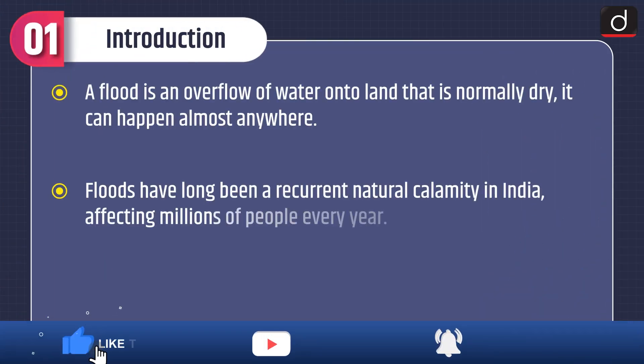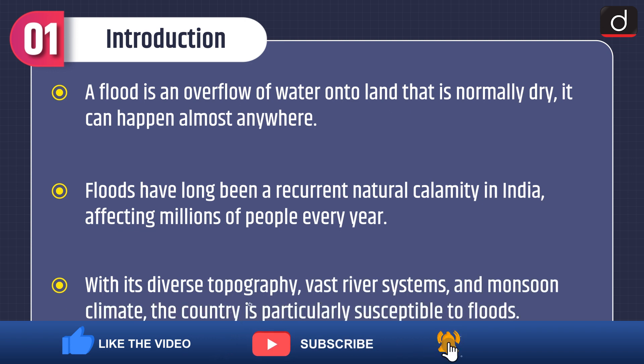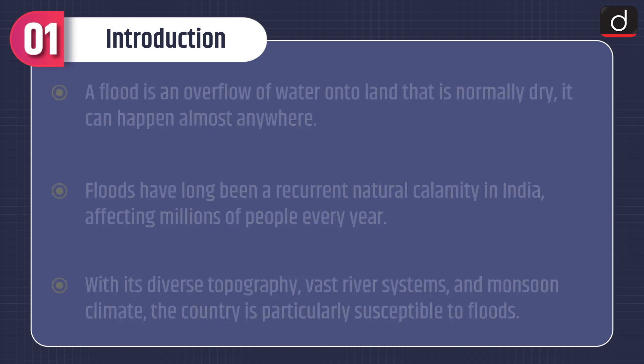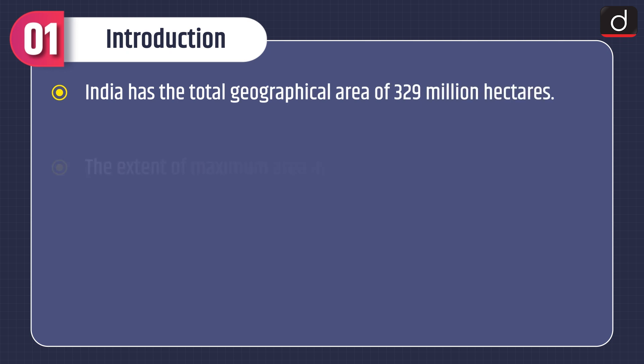A flood is an overflow of water onto land that is normally dry, and it can happen almost anywhere. Floods have long been a recurrent natural calamity in India, affecting millions of people every year. With its diverse topography, vast river systems, and monsoon climate, the country is particularly susceptible to floods.